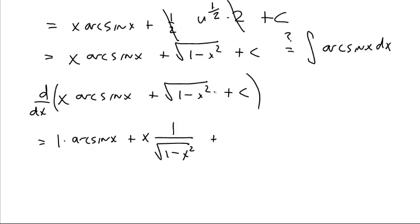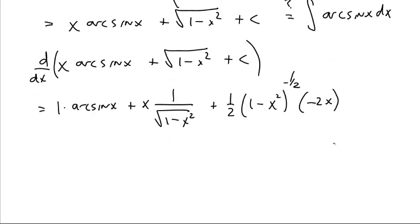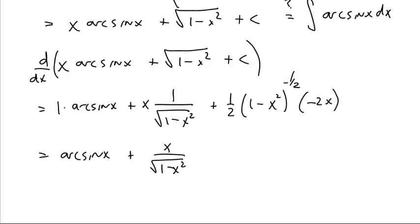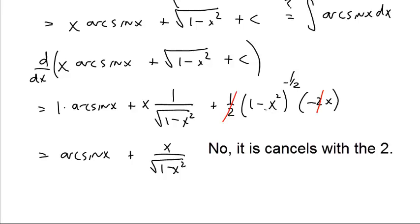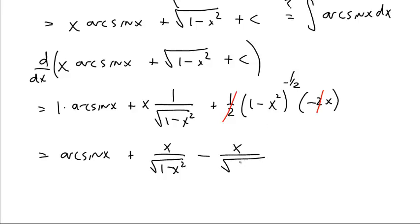And then we take the derivative of the square root term. This is something to the 1 half power, which would be 1 half times that thing to the negative 1 half power, times the derivative of what's inside, which is negative 2x. That gives 1 times arcsine — just arcsine of x — plus x over the square root of 1 minus x squared. The 1 half cancels with the negative 2x. Something to the negative 1 half power is a square root down below. This negative comes out front, x stays up top: negative x over the square root of 1 minus x squared. x over the square root of 1 minus x squared minus x over the square root — they cancel! All we have left is what we wanted. The answer is yes.